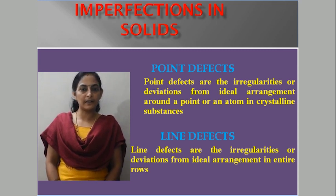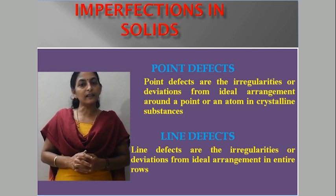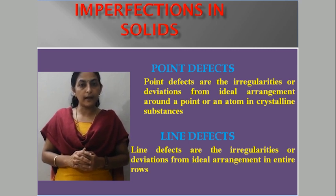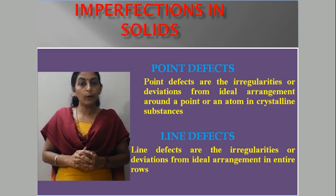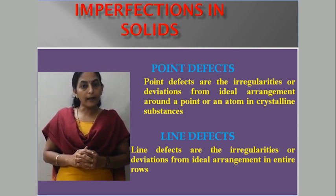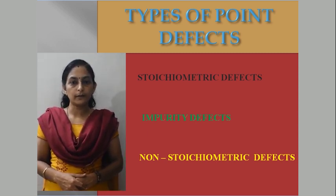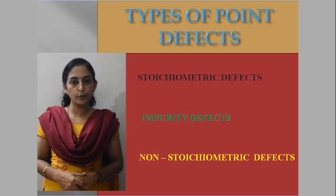Point defects are deviations or irregularities around a point — a small deviation of a particle in the lattice. A line defect involves irregularities across an entire row of a crystal. So, point defects are defined as irregularities around a point, while irregularities throughout an entire row are known as line defects.